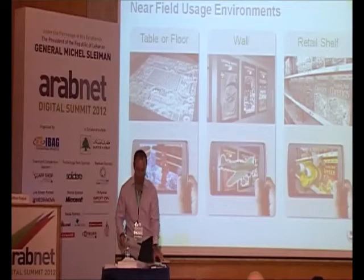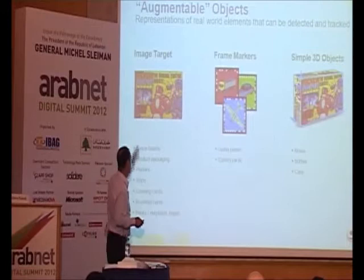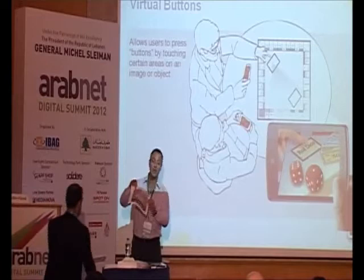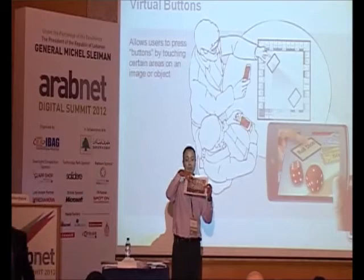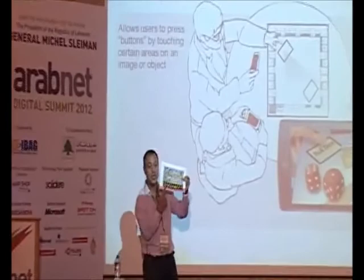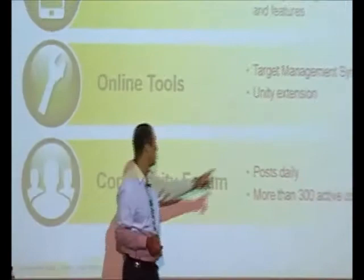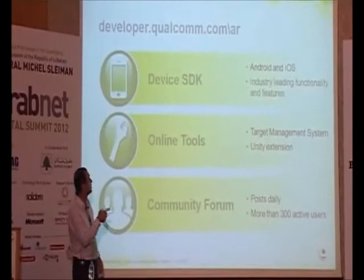The kinds of targets you can recognize are image targets, frame markers, or even simple 3D objects. Virtual buttons are buttons you can bring on the target itself. For example, if you put the camera on top of a target with the right application, you will see a Ferrari. If you press with your finger on the target itself — not on your phone — you can change the color of the Ferrari. These are called virtual buttons. You have a device SDK, online tools for target management, and a community forum, all at developer.qualcomm.com/AR.